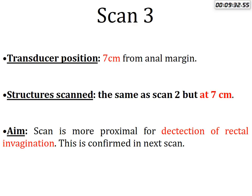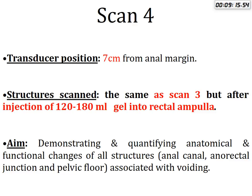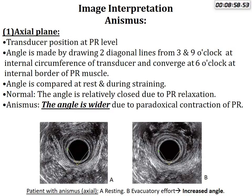Scan three: the probe is introduced seven centimeters from the anal verge, done at rest, then during squeeze, then at rest again. At this level we detect rectal invagination and rectal prolapse if present. Scan four is like scans two and three, but we inject approximately 30 to 80 ml of gel into the rectum to demonstrate the pelvic floor and anorectal junction in the axial plane.